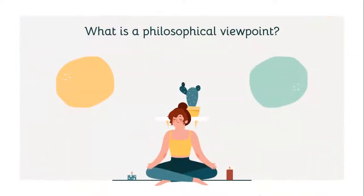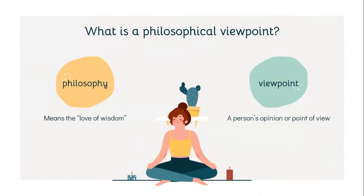So what is a Philosophical Viewpoint? Let's break it up into the different words. Philosophy means the love of wisdom. A viewpoint is a person's opinion or point of view. So a Philosophical Viewpoint refers to a theorist who has done research and is now offering their philosophical viewpoint.